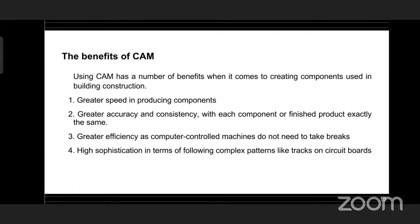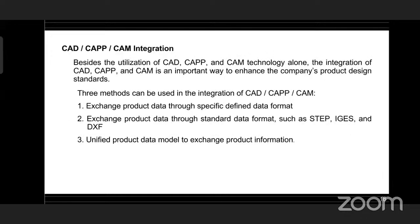The benefits of CAM compared to manually operated machines include greater speed in producing components, greater accuracy and consistency with each product being exactly the same, greater efficiency as computer-controlled machines do not need to take breaks, and high sophistication in terms of following complex patterns like tracks on circuit boards. CAD, CAPP, and CAM integration is an important way to enhance the company's product design standards. Three methods can be used: exchange of product data in a specific device data format, exchange through standard data formats such as STEP, IGS, and DXF, and a unified product data model to exchange product information.